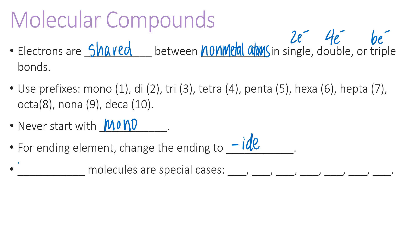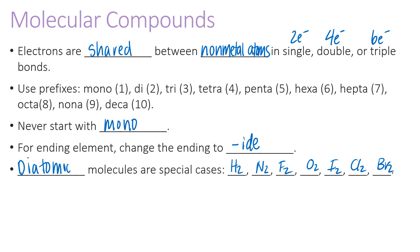There are some special cases: the diatomic molecules. 'Di' means two, so these elements always exist as pairs when by themselves. The seven diatomic elements are hydrogen, nitrogen, fluorine, oxygen, iodine, chlorine, and bromine. For example, plain iodine wouldn't be written as I — it would be I₂.